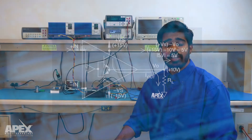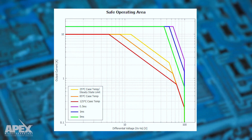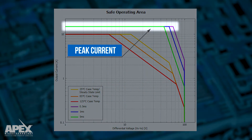There are three limitations plotted on the SOA graph. The first one is maximum current handling capability of the power op-amp. The horizontal line at the top of the SOA curve shows the maximum current that the power amplifier can drive at the output.